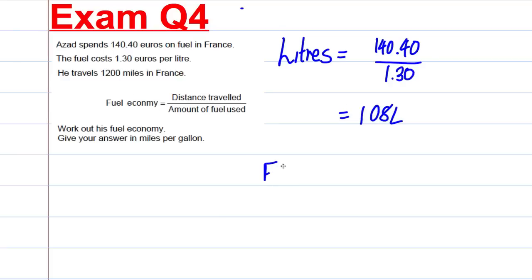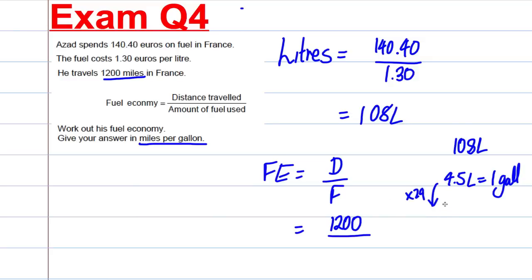Now, his fuel economy is given by the formula distance over fuel, how much fuel we use. His distance, we want the fuel economy in miles per gallon. So we have got that the distance is 1,200, but we want in gallons. Now, 108 litres, we need to work out how many gallons this is. We know that 4.5 litres is equal to 1 gallon. And 108 divided by 4.5 is 24. So if I multiply this by 24, I get 108 litres, and that must be 24 gallons. So this 108 litres is therefore 24 gallons. So you divide by 24. 1,200 divided by 24 is equal to 50 miles per gallon, as required. And we're done with exam question 4.